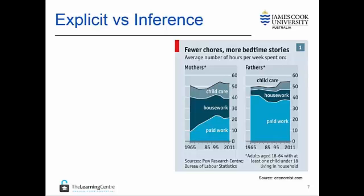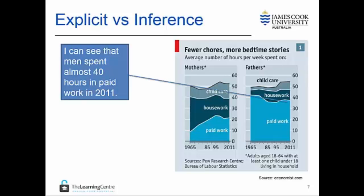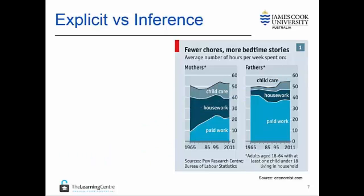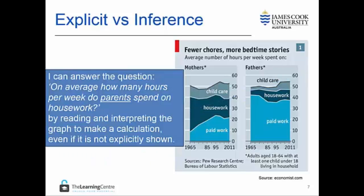So now we have two types of data. First, what is explicit in the graph — what we can easily see — and secondly what we can infer. I can see here that men spent almost 40 hours in paid work in 2011. I can infer that men spent 113 hours of a week relaxing because I know that there are 168 hours in a week and that 55 of them were spent on work or child care. If I were asked the question on average how many hours per week do parents spend on housework, I can answer by looking at the graph and making a calculation, even if that information is not explicitly shown.